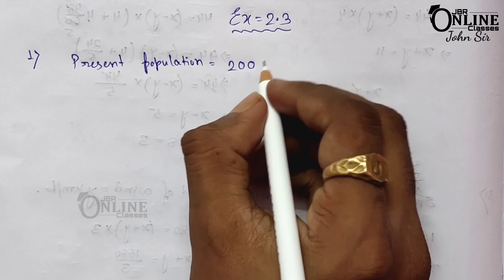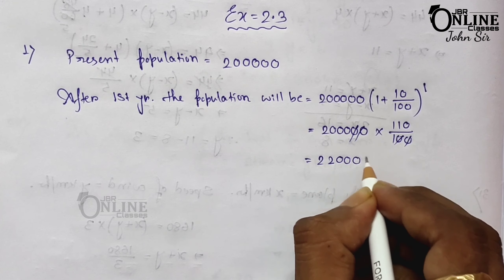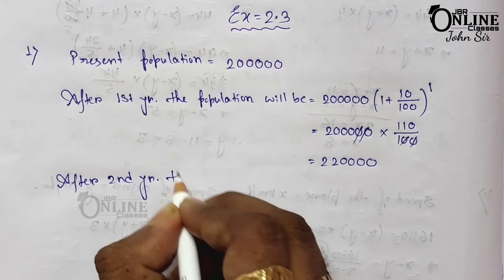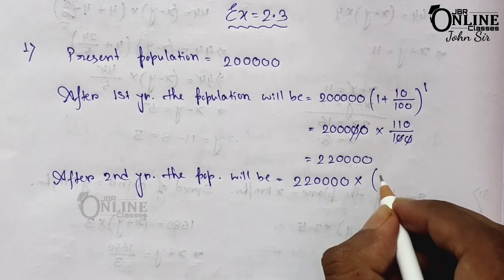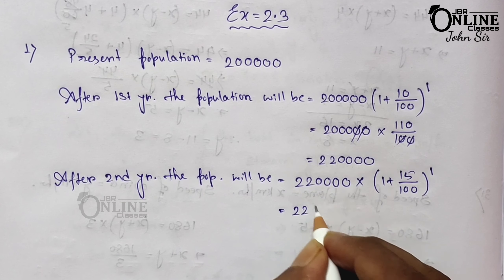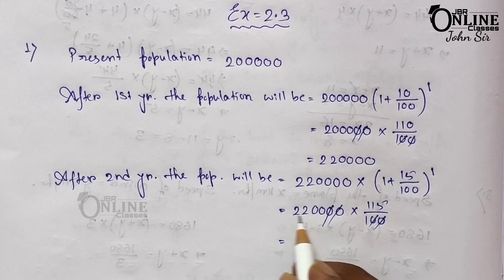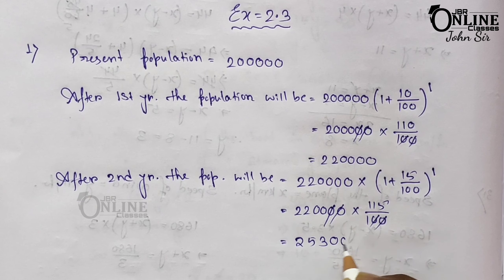So here: two lakh into (1 + 10/100) to the power one, which equals two lakh into 110/100. That gives us 2,20,000. After the second year, the population will be 2,20,000 into (1 + 15/100), which is 2,20,000 into 115/100. That equals 2,53,000 — this is your answer.